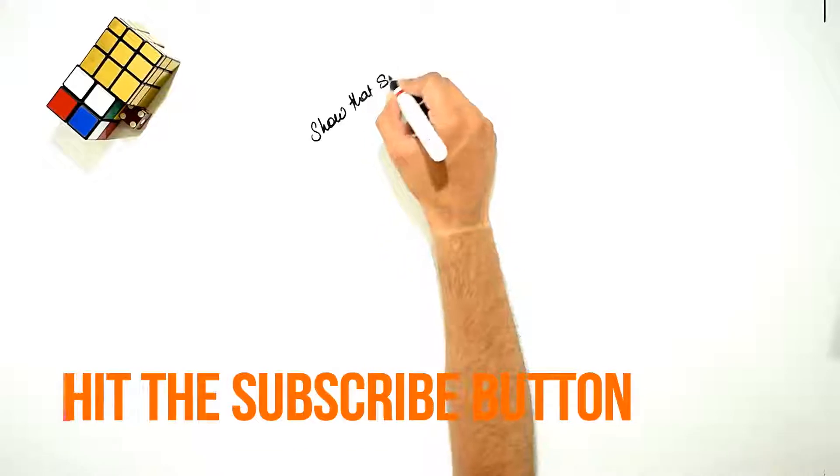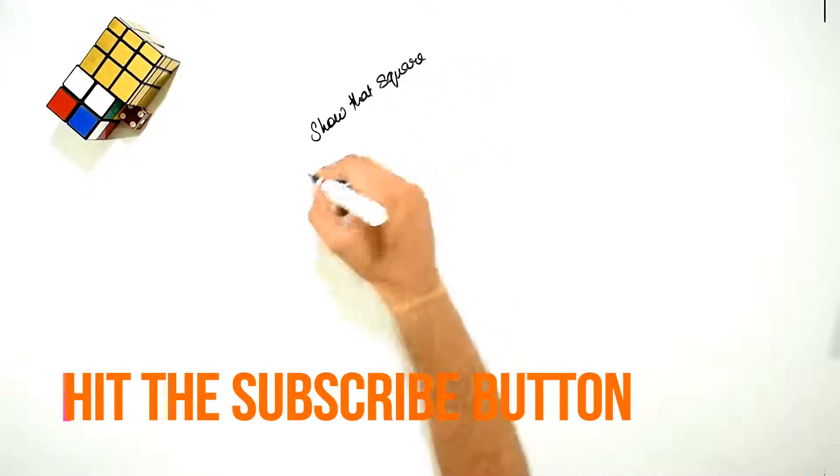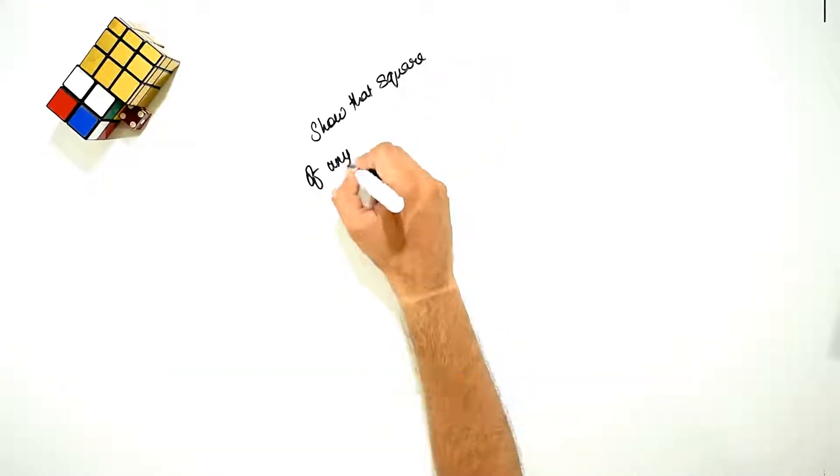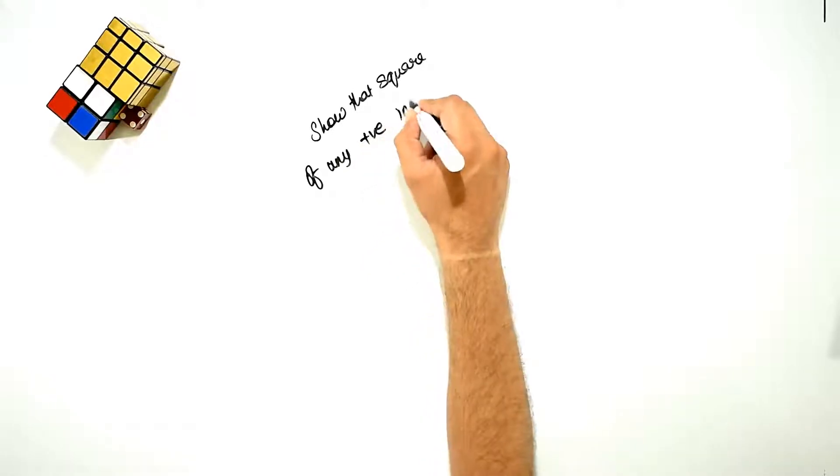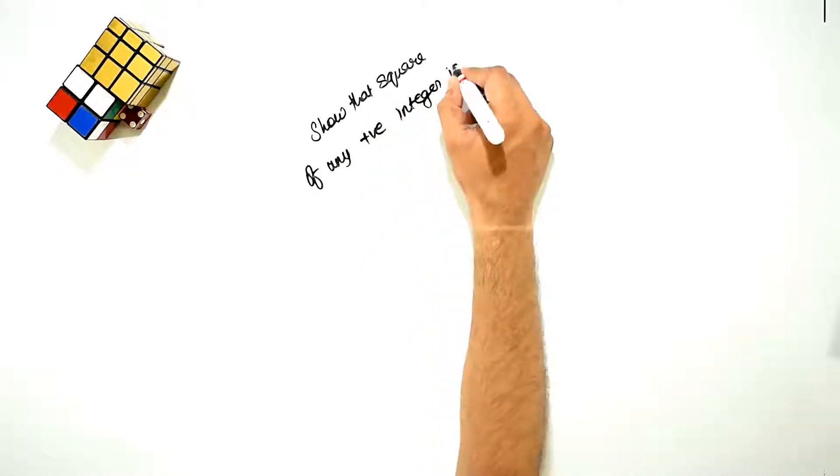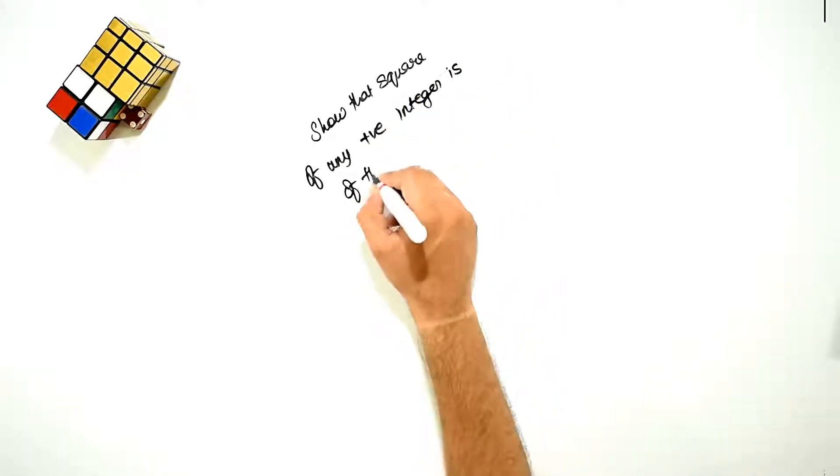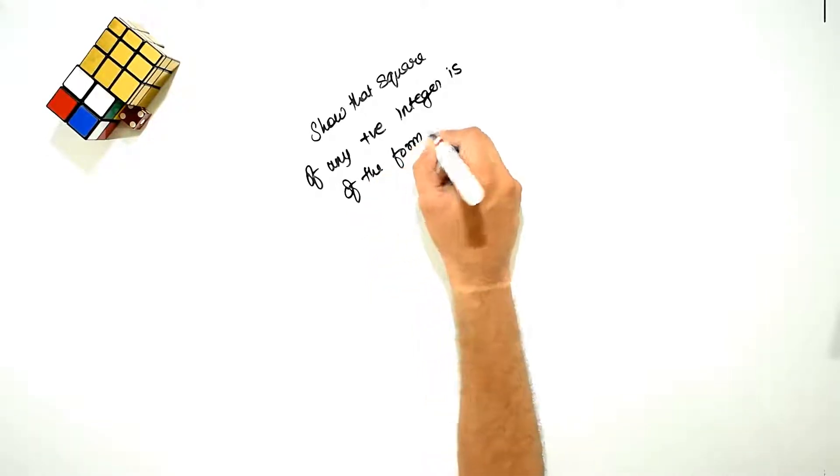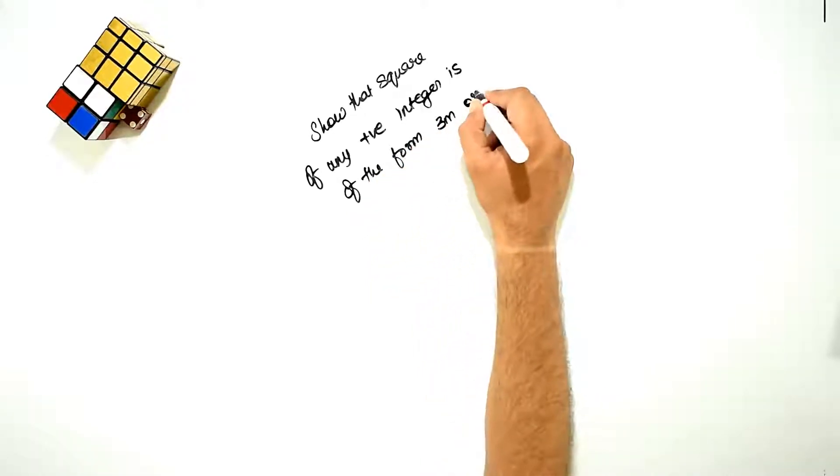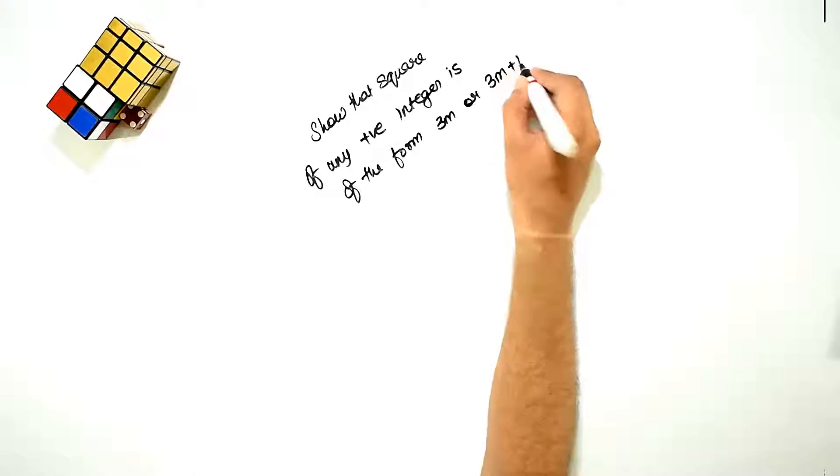Show that square of any positive integer is of the form 3m or 3m plus one.